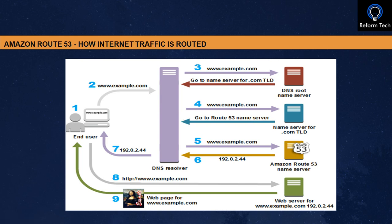When you create Route 53 in AWS, you get four name servers. The TLD server sends these four Route 53 name servers back to the DNS resolver, which caches them. So the next time you hit www.example.com, it doesn't repeat all those steps — it gets the answer from the DNS resolver's cache. Going back to the first-time flow: the request goes to the Route 53 name server, which looks up the record in the hosted zone for example.com and returns the associated IP address, such as 192.0.2.44, back to the DNS resolver, which also caches that IP.